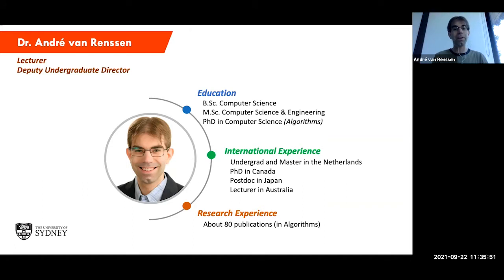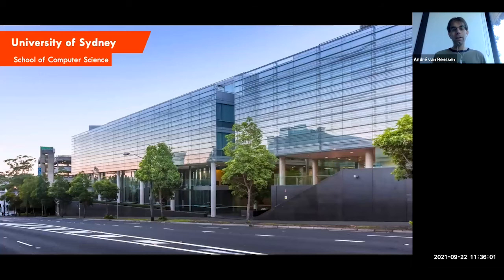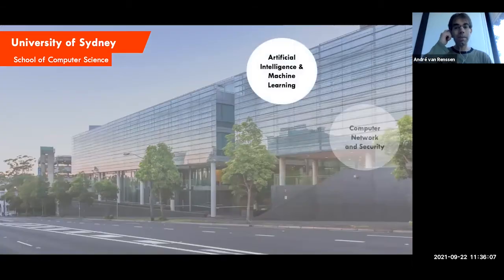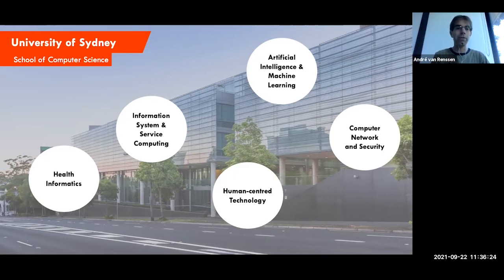But enough about me — that's not what you're here for. You want to learn about the Bachelor of Advanced Computing and what studying at the University of Sydney is like. Our School of Computer Science is housed in this building over here, and we have a large number of different things you can learn from us, including artificial intelligence, machine learning, health informatics, cybersecurity, and network security.